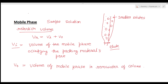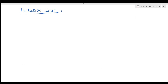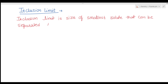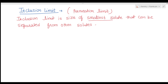The maximum size for which this equation holds is called the inclusion limit of the packing material. The inclusion limit means the size of the smallest solute that can be separated from other solutes in size exclusion chromatography. The inclusion limit is also known as the permeation limit — it refers to the smallest solute size that can enter the packing material.